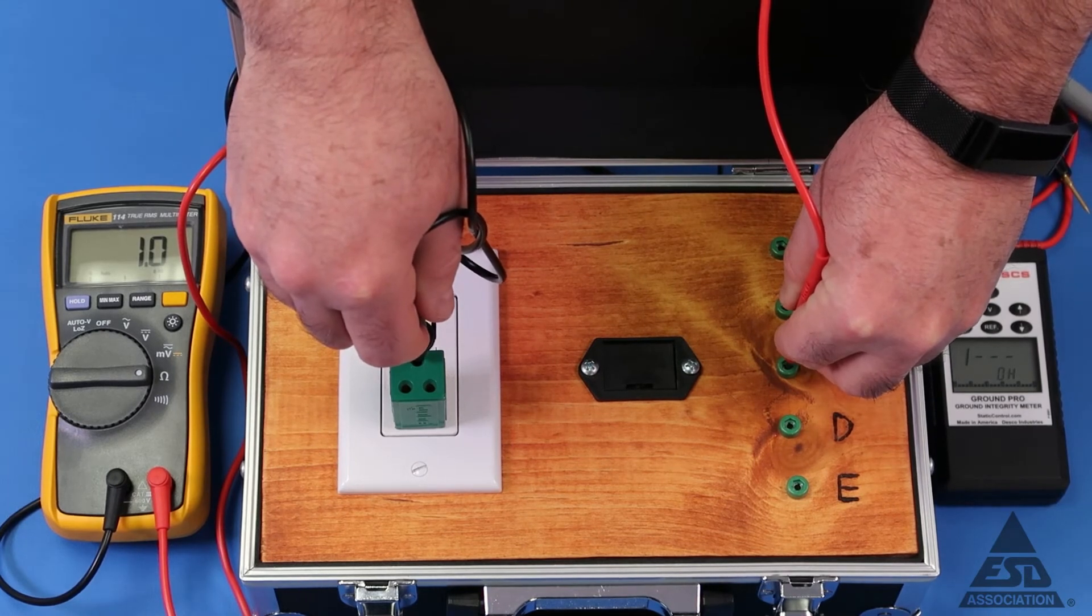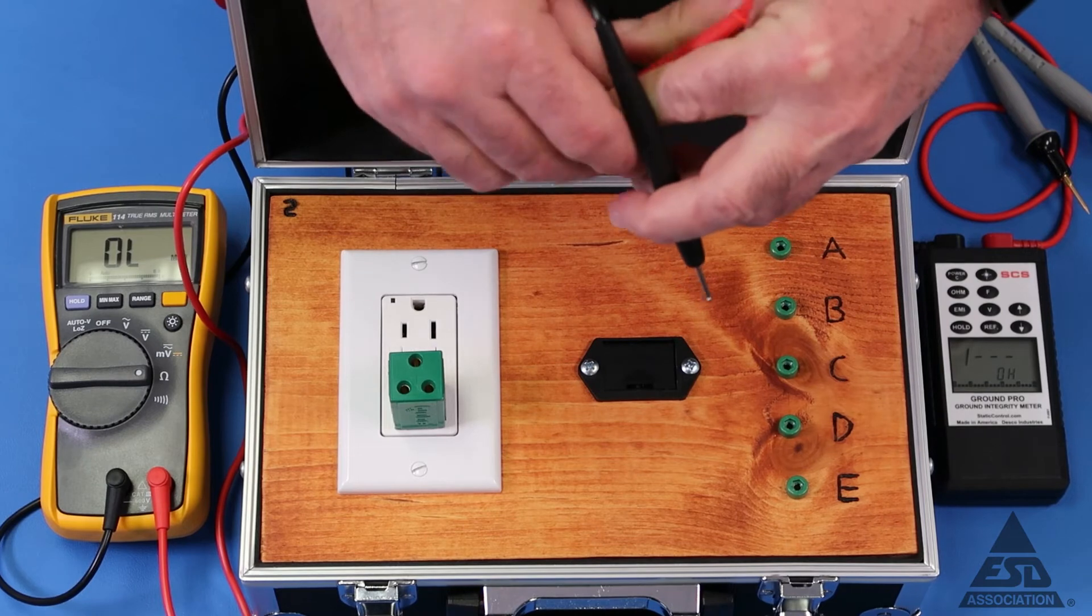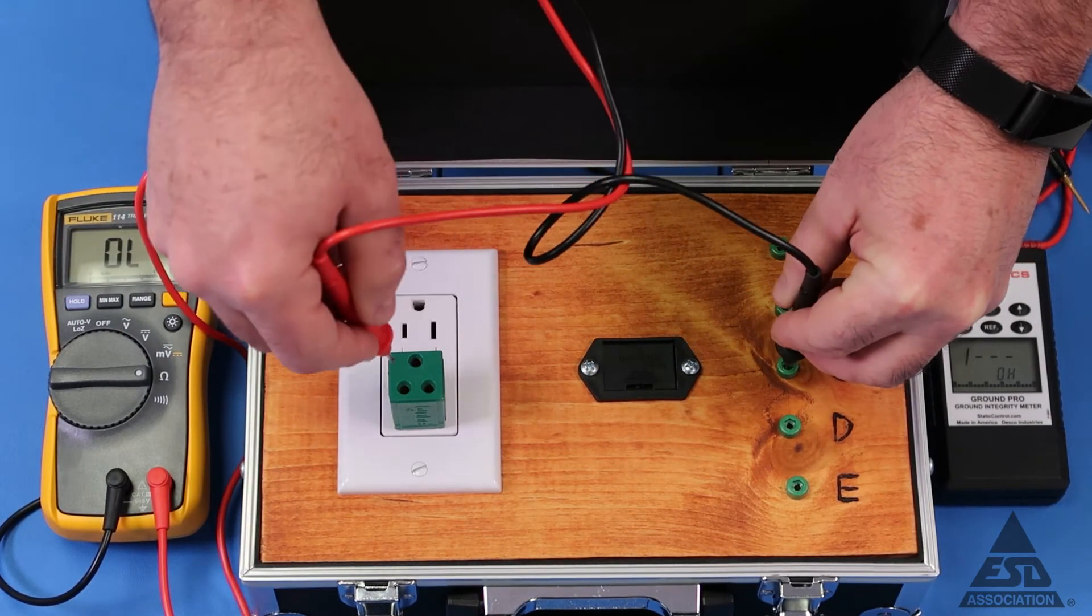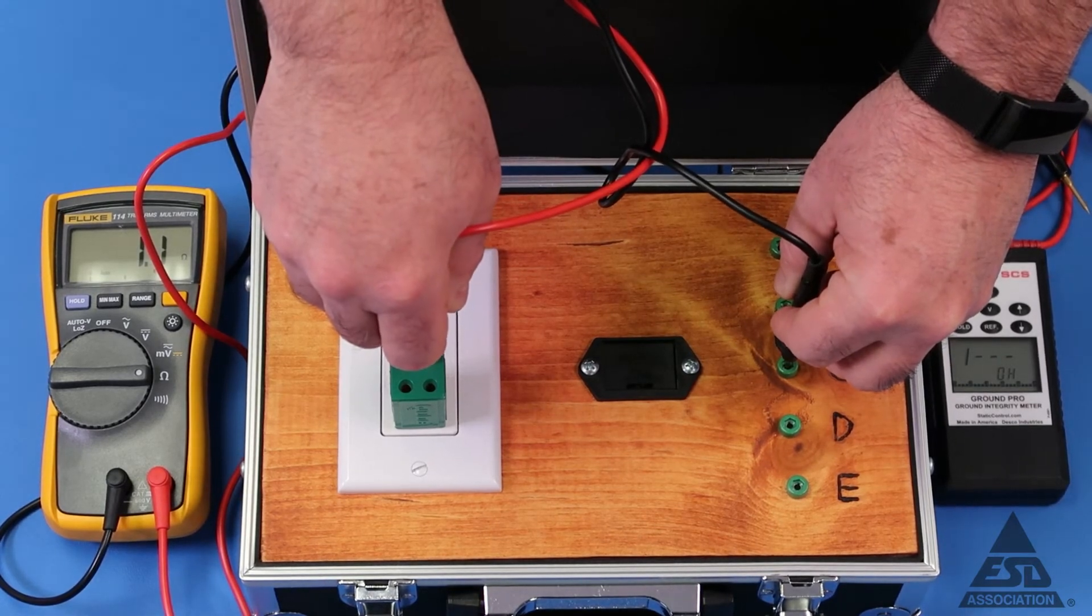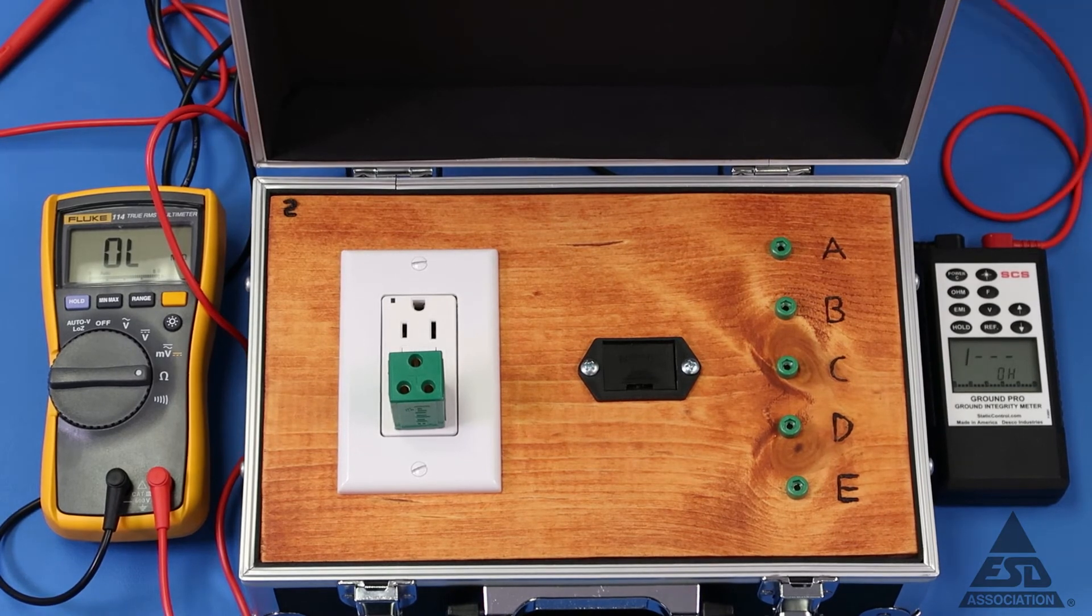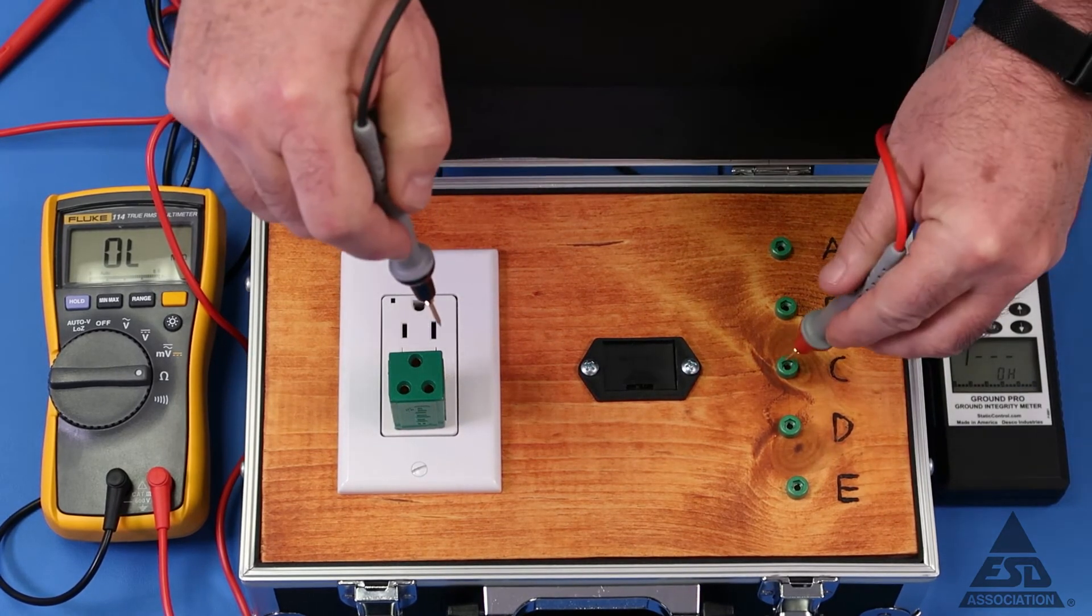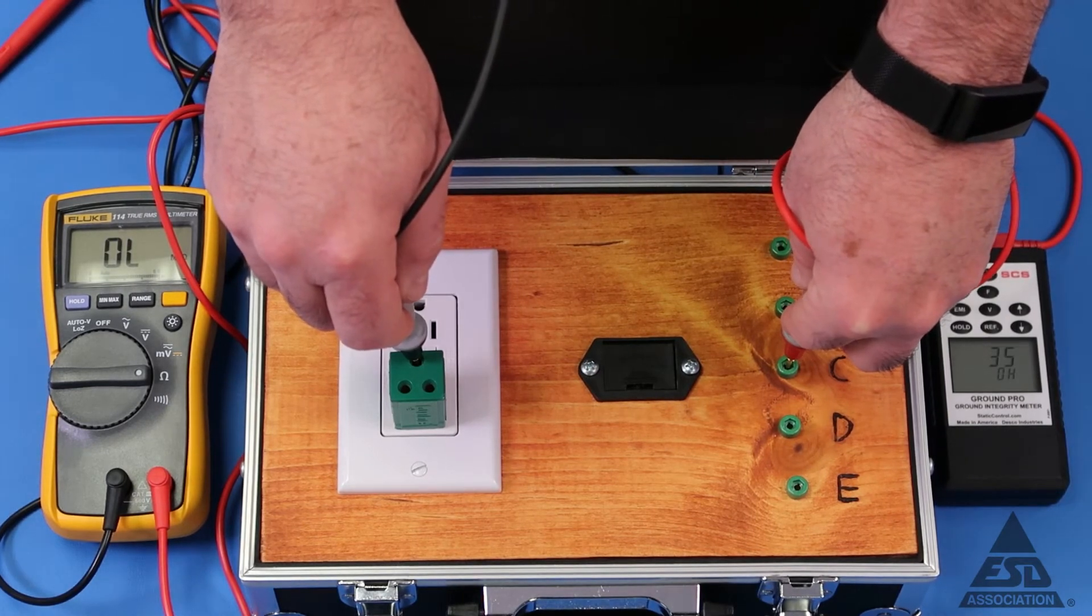And we get one ohm here. Reverse it, still about one ohm, 1.1. Impedance measurement, what do we have here?